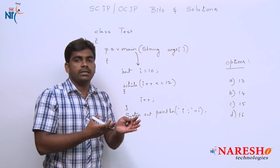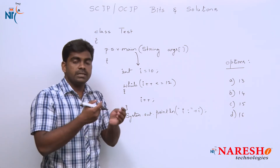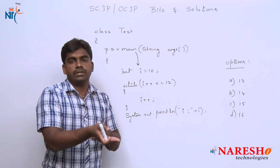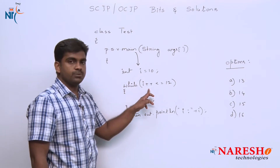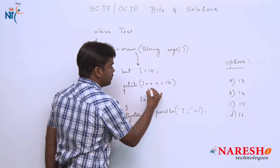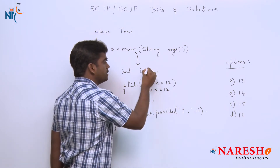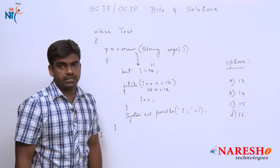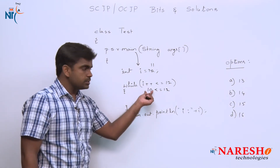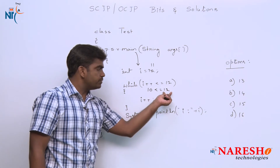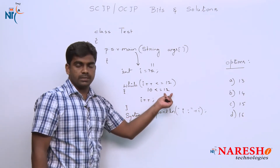What is the difference between pre increment and post increment? Pre increment means first increase the variable value and then substitute into the equation. Post increment means first substitute the value — so 10 will be substituted — and later the value will be increased. With the substituted value it will check the condition: 10 is less than or equal to 12. Is the condition true?